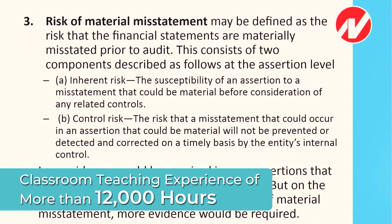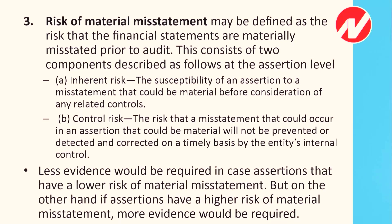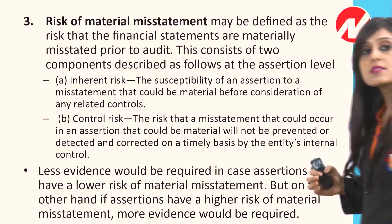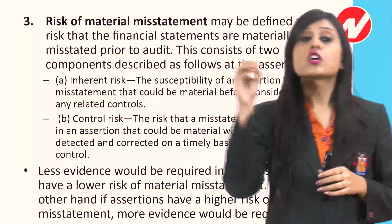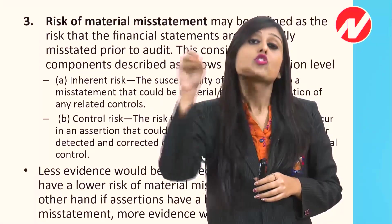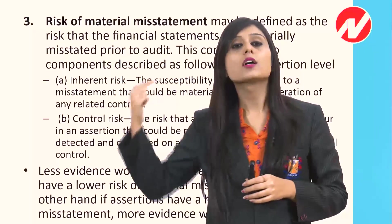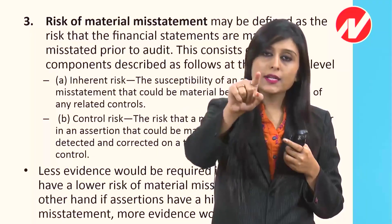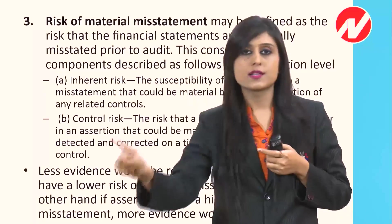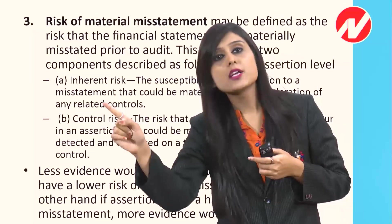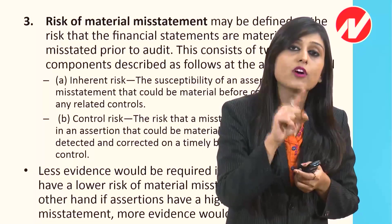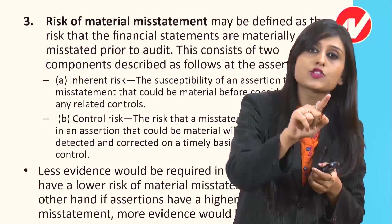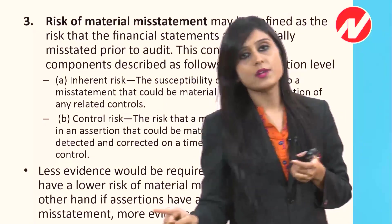Less evidence would be required for assertions with a lower risk of material misstatement; but if assertions have a higher risk of material misstatement, more evidence would be required. To recap: higher materiality — more evidence; less materiality — less evidence. Larger, heterogeneous population — more evidence; smaller, homogeneous population — less evidence. Higher risk of material misstatement in assertions — more evidence; lower risk — less evidence.